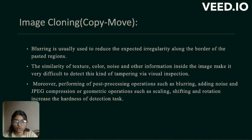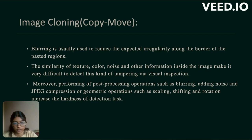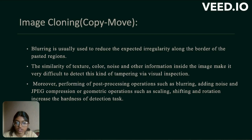Blurring is usually used to reduce the expected irregularity along the border of the pasted region. The similarity of texture, color, noise and other information inside the image makes it very difficult to detect these kinds of tampering via visual inspection. Moreover, performing post-processing operations such as blurring, adding noise and JPEG compression, or geometric operations such as scaling, shifting and rotation increase the difficulty of the detection task.